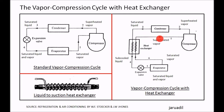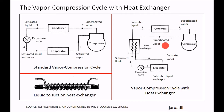And the saturated vapor will slightly increase in temperature. It will become superheated vapor before entering the compressor. Unlike in the original cycle, where the refrigerant entering the compressor is just saturated vapor. Here, it is slightly superheated — just a few degrees, around 10 degrees of superheat.